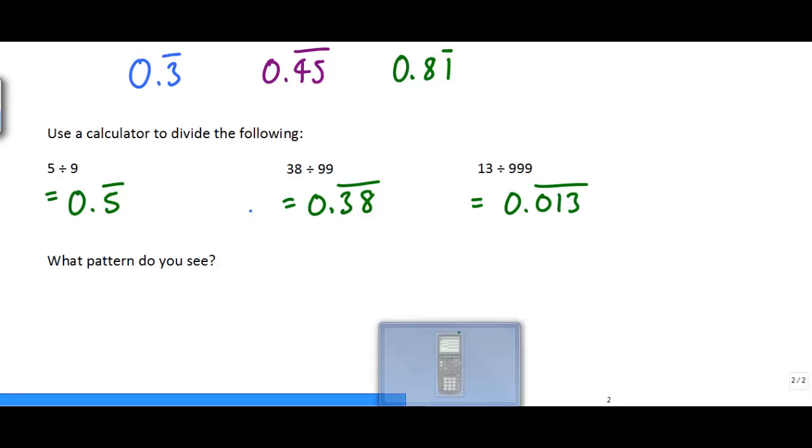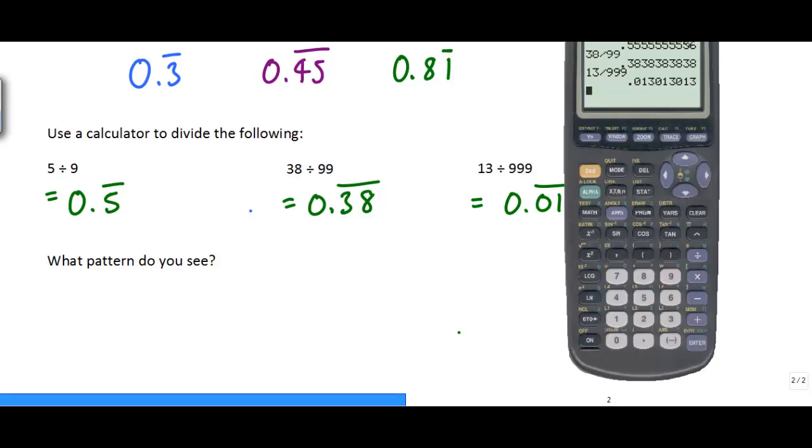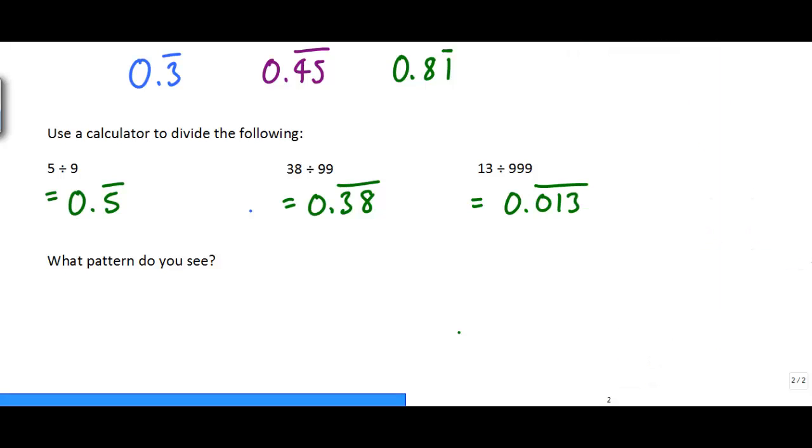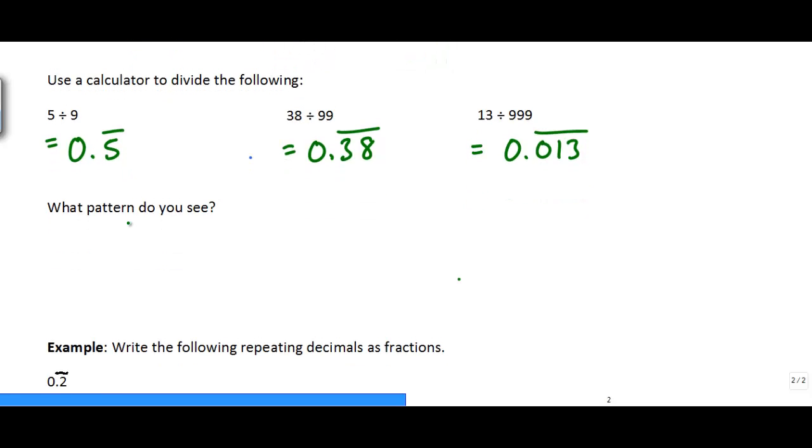So when we look at these patterns for our fractions, what we should notice is that the digit, the numerator repeats and the number of repeating decimals is the same as the number of nines in our denominator. So I had one nine here, I had one repeating digit, two nines here, two repeating digits, three nines there, three repeating digits. So the number of digits that repeat equals the number of nines in the denominator.